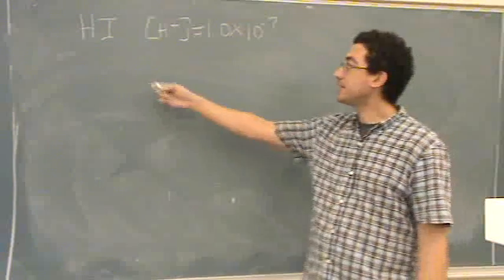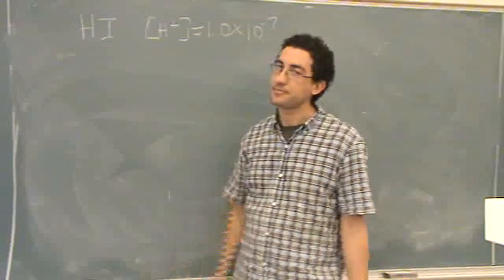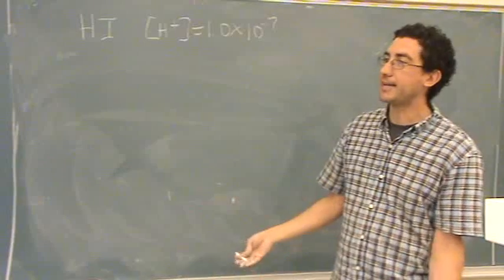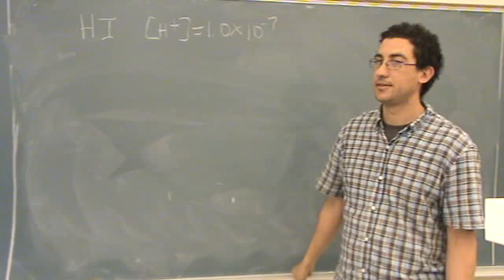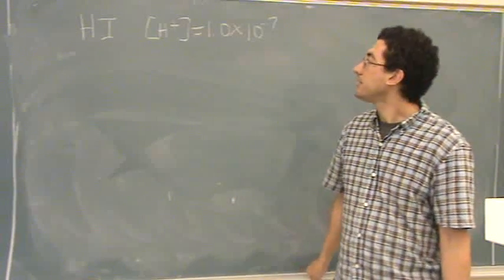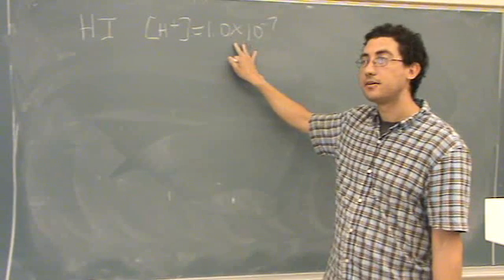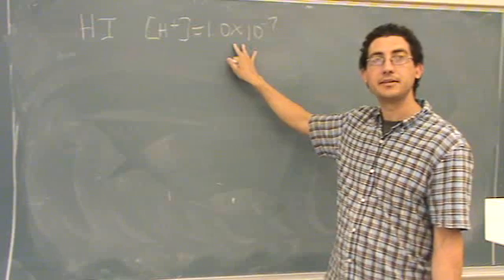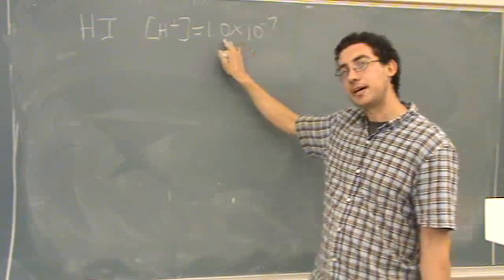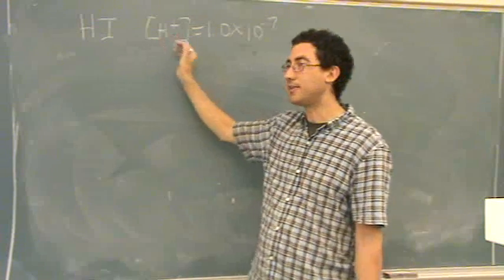What happens if you have, so this is a strong acid, right? Normally for a strong acid, how would you find the pH? Negative log of the H+, which would be in this case? pH would be 7, which is kind of weird because you have an acid, and 7 is neutral.